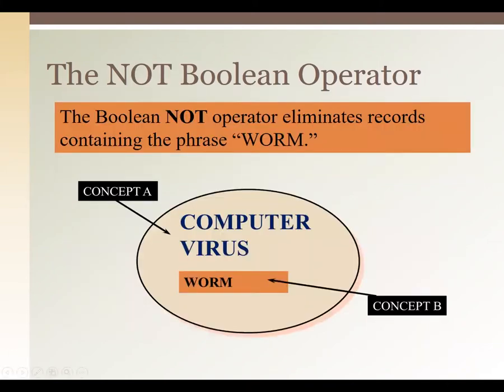You can also use NOT to exclude a keyword from your search. It works the same way a minus sign works in Google. So if you're searching for cookie recipes and keep getting Pinterest pages, you can change your search to 'cookie recipe -Pinterest' — no space before Pinterest — and Google will eliminate those pages from your results. In library databases it's the same concept using the word NOT. So if you search for 'computer virus NOT worm,' you won't have to wade through articles you don't need.